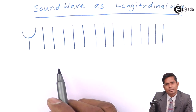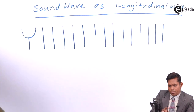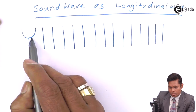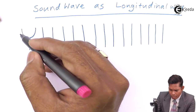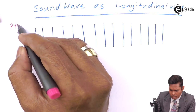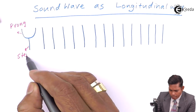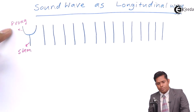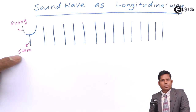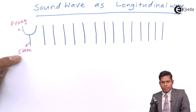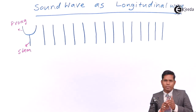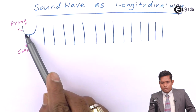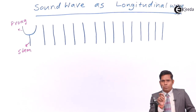Once the tuning fork is set into vibration, this is called the stem and this is the prong. This is the prong of the tuning fork and this is the stem. When that tuning fork is set into vibration by hitting it on a rubber pad, it will start vibrating. This prong will start vibrating to and fro.